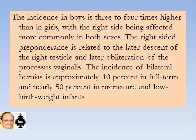The incidence in boys is three to four times higher than in girls, with the right side being more common in both sexes. Right-sided preponderance is related to the later descent of the right testicle and the later obliteration of the processus vaginalis. The incidence of bilateral hernia is approximately 10 percent in full term and 50 percent in premature and low birth weight infants.